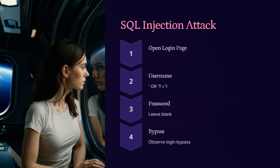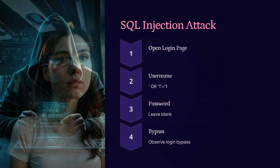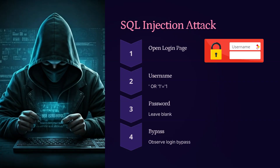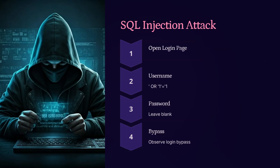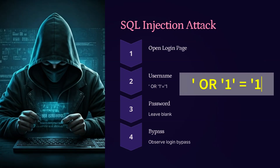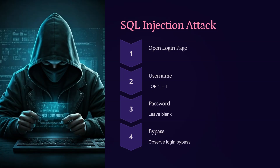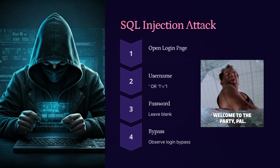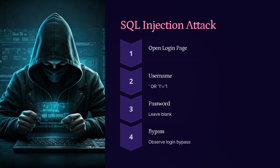Now let's walk through a basic SQL injection attack to demonstrate how vulnerable login forms can be exploited. Step 1: Open the login page — this is your entry point. Step 2: Enter a malicious username using a classic SQL injection string like: single quote, space, OR, quote, 1 equals 1. Step 3: Leave the password blank — no password is required for this attack to work. Step 4: Click login and observe. If the system is vulnerable, you'll gain access without valid credentials, showing a successful login bypass. This simple attack highlights why input validation and secure coding practices are essential.